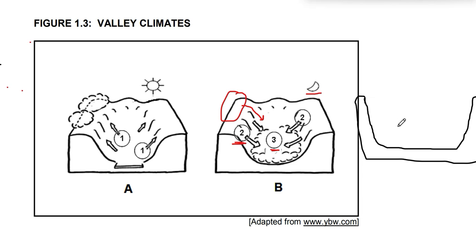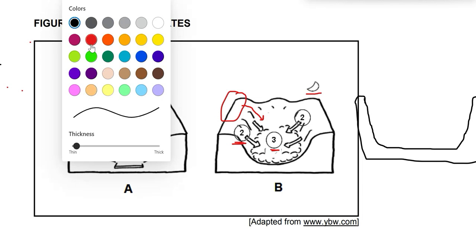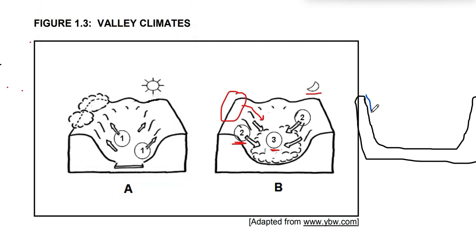The diagram shows the valley. Number 3 has formed because there are katabatic winds blowing cold air downslope. These are your katabatic winds — that is your first mark. Number 3 could be radiation fog, it could be mist, it could be frost pockets.